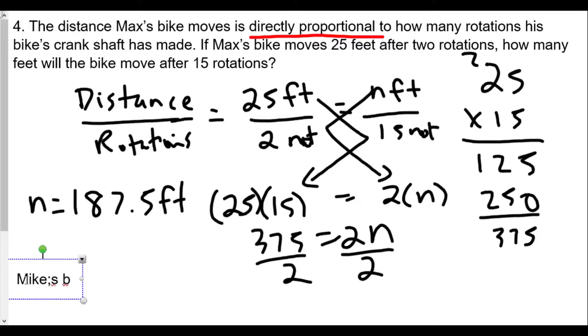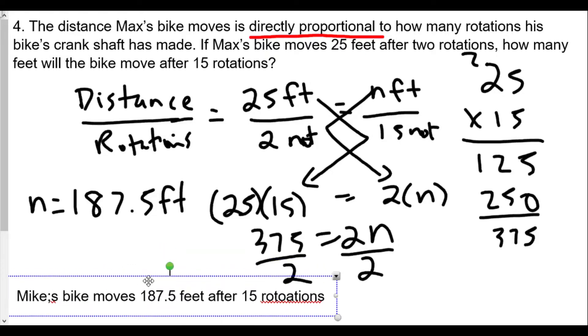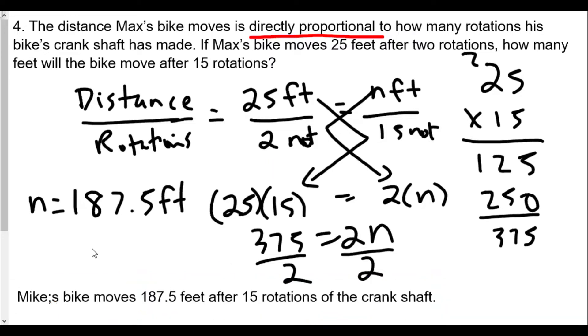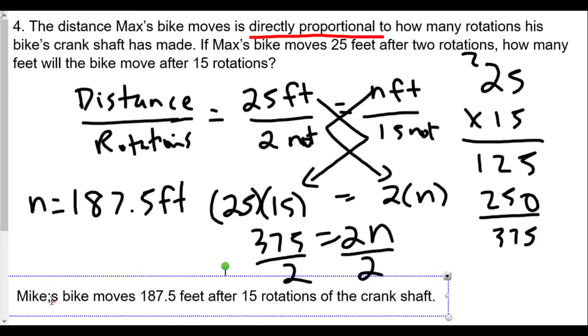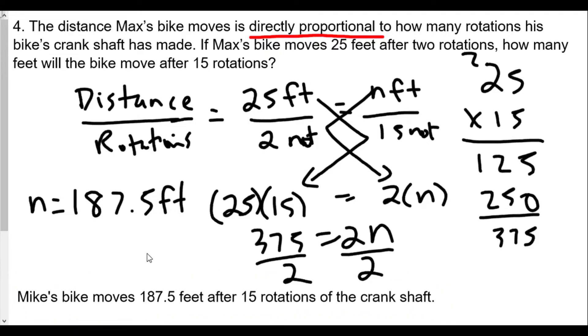Mike's bike moves 187.5 feet after 15 rotations of the crankshaft. We want to make sure that we definitely have the answer numerically, 187.5. Definitely. That's true. We also want to be able to end with the sentence just in case we were asked to show the understanding of what the question is asking for. So the answer may not always be the numerical answer, may not be the only thing we're looking for. We might have to describe what do these numbers represent.